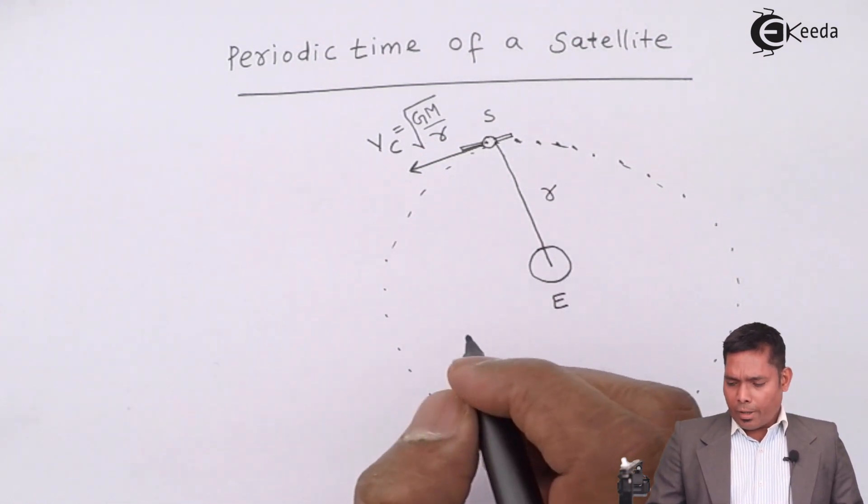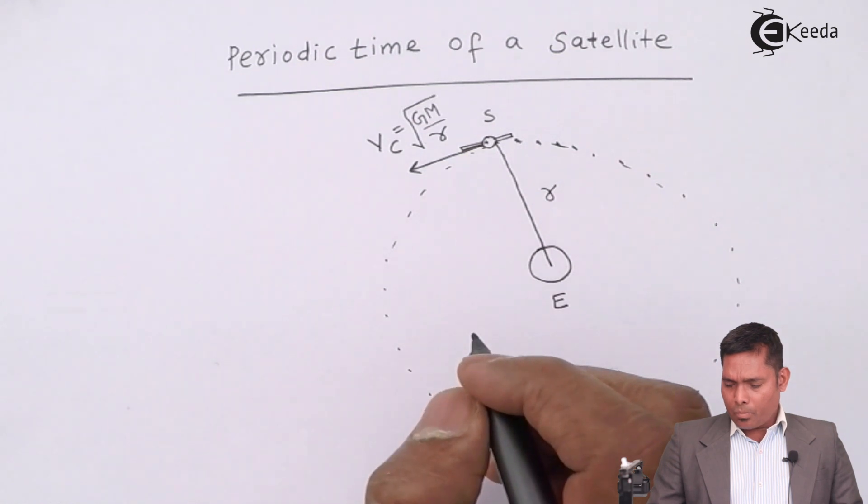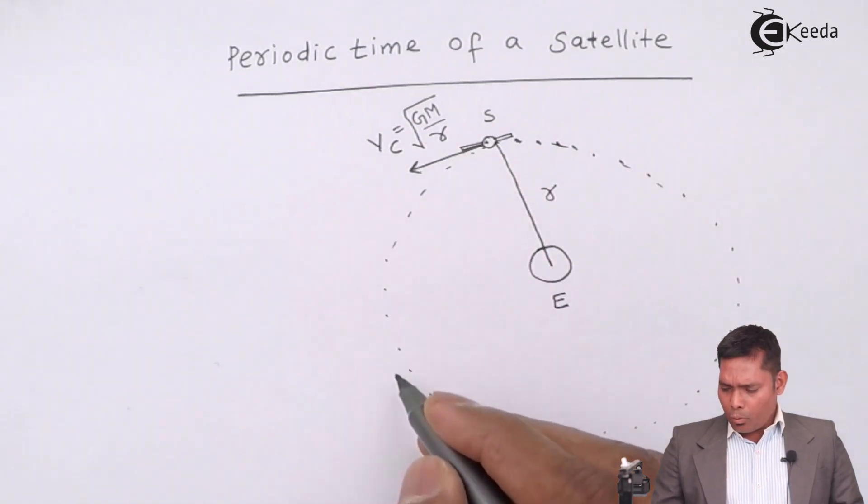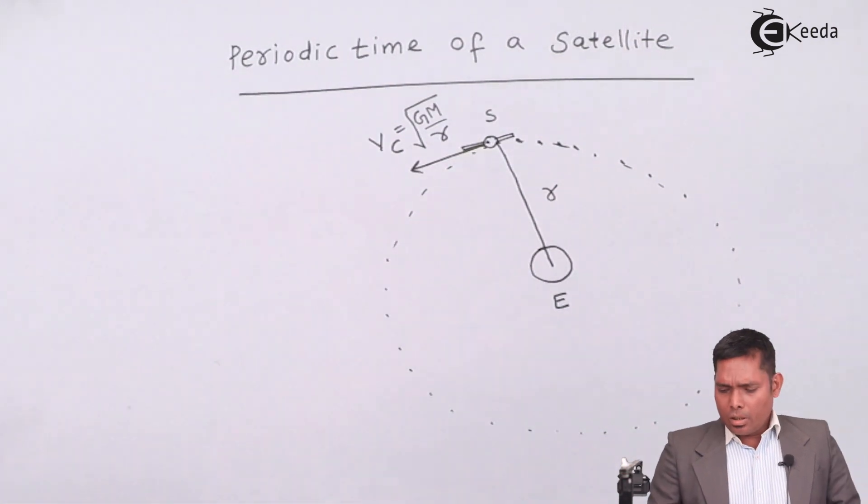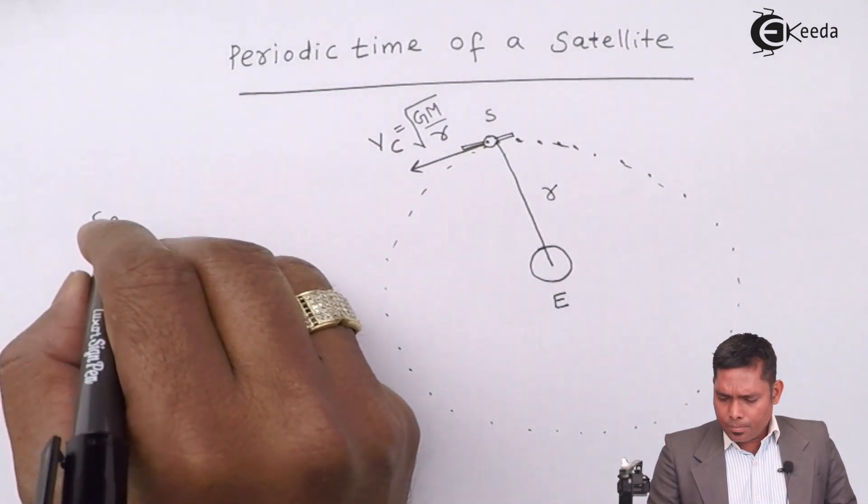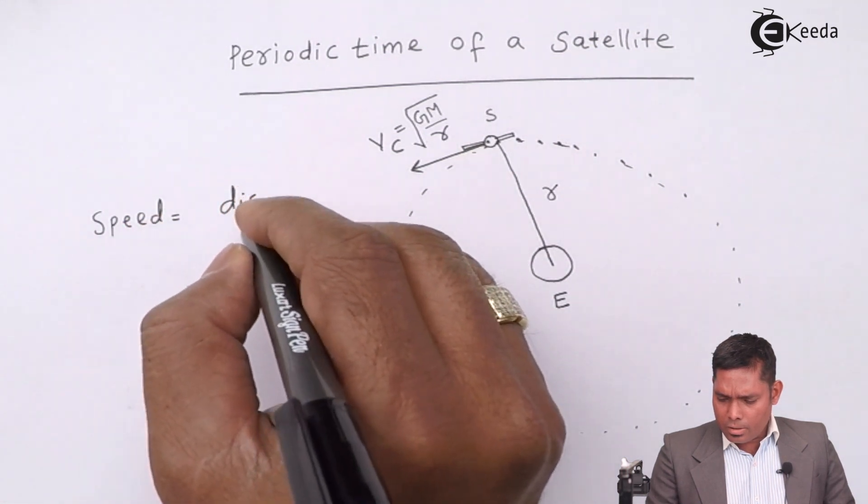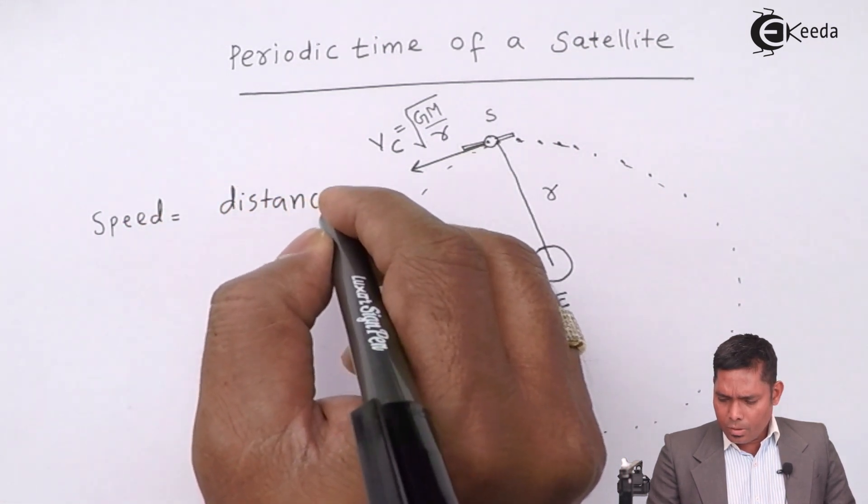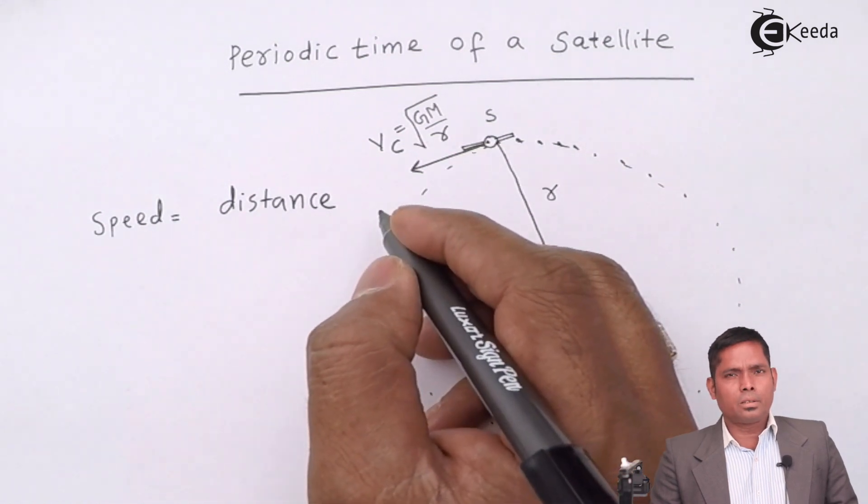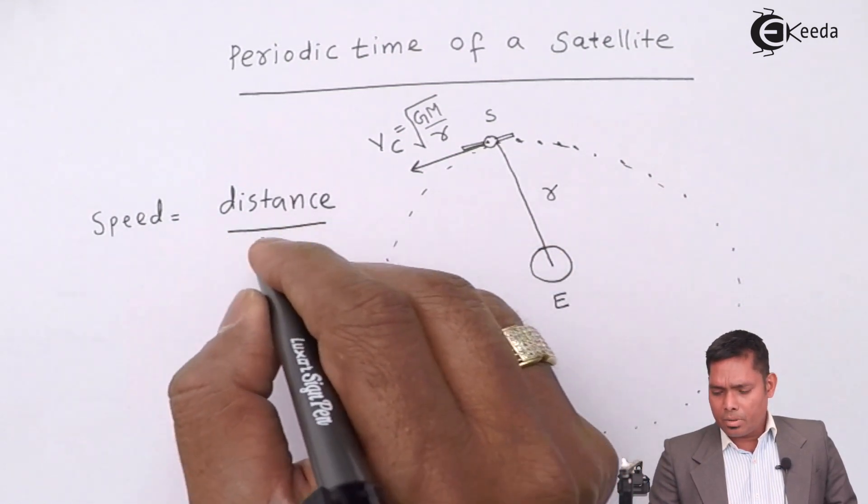To find that, we have to see with what speed it is moving and how much distance it covers. The speed is the distance it covers, distance covered by the satellite divided by the time taken.